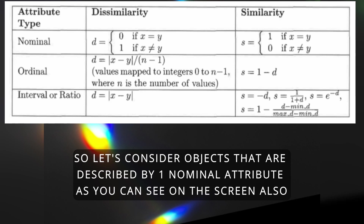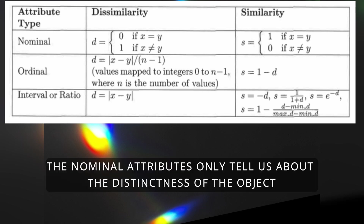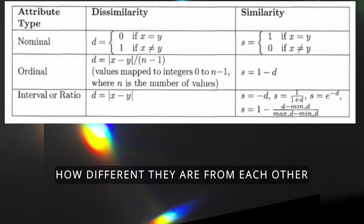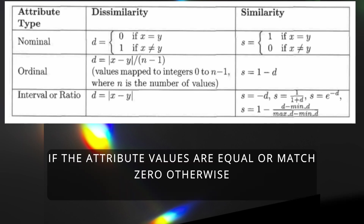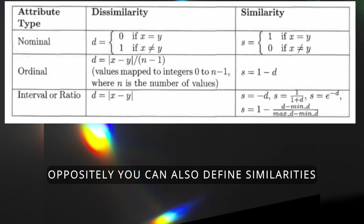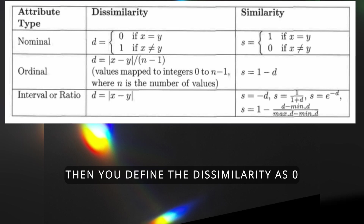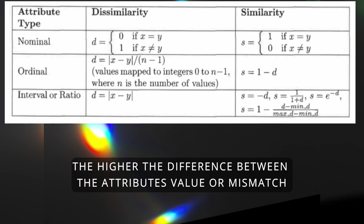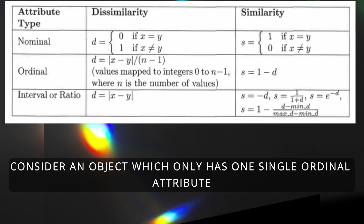Let's consider objects described by one nominal attribute. Nominal attributes only tell us about the distinctness of the object — how different they are from each other. The similarity is defined as one if the attribute values are equal or match, and zero otherwise. Conversely, the dissimilarity is zero if the attributes match, and the higher the mismatch between attribute values, the higher the dissimilarity.